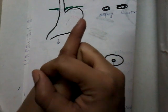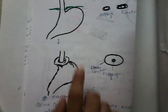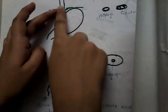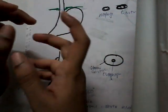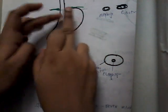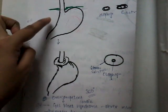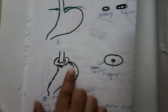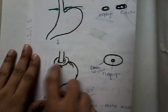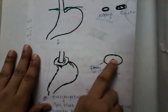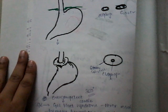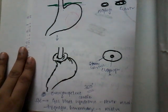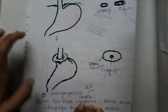So in Nissen fundoplication, we mobilize the fundus and then wrap it around the esophagus and suture it, resulting in 360-degree wrapping. If you do a cross-section at this stage, you see the esophagus and the fundus wrapped around it 360 degrees. This is the major surgery, which is Nissen fundoplication.